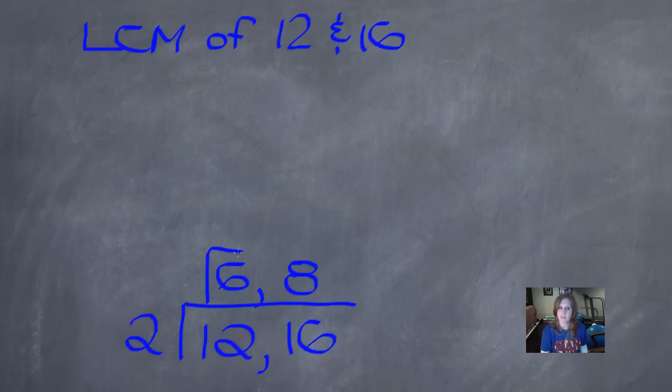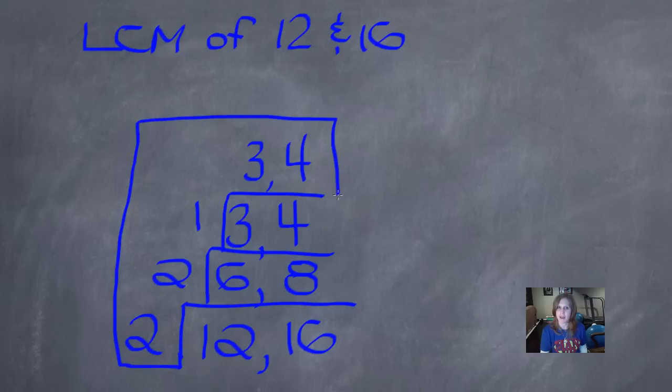2 goes into 12 six times. 2 goes into 16 eight times. And what goes into both 6 and 8 evenly? 2 again. 2 goes into 6 three times. 2 goes into 8 four times. And what goes into 3 and 4 evenly? 1. 1 goes into 3 three times, and 1 goes into 4 four times. Now, we've made our cake, but we've got to make our L for LCM and multiply all the way around. 2 times 2 is 4, 4 times 1 is 4, 4 times 3 is 12, and 12 times 4 is 48. So the LCM of 12 and 16 is 48.